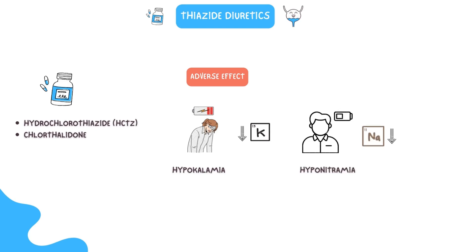Next, hyponatremia. Thiazide diuretics' mechanism of action is to reduce sodium reabsorption, which leads to reduced fluid reabsorption and, ultimately, lower levels of circulating sodium. If hyponatremia were to develop, it would do so in the first two to three weeks of treatment. Following this period, the patient is in a new steady state where additional salt and water losses do not take place.